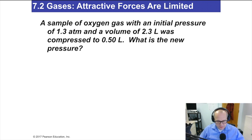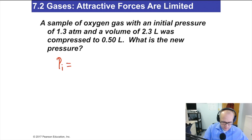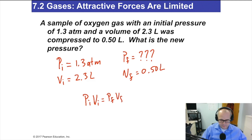Here's an example: a sample of oxygen gas with an initial pressure of 1.3 atmospheres and a volume of 2.3 liters was compressed to 0.5 liters. What is the new pressure? We know Pi = 1.3 atm, Vi = 2.3 L, Vf = 0.50 L, and we need to solve for Pf.